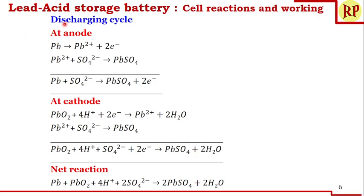Now we will understand what happens during a discharging cycle — that is, when we are using the battery to get electricity. At the anode, oxidation always occurs, and at the cathode, reduction always occurs. The lead anode undergoes oxidation to form Pb²⁺ and release 2 electrons. This Pb²⁺ combines with sulfate ions from the sulfuric acid to form lead sulfate, which surrounds the electrode. So the overall anodic reaction is: Pb + SO₄²⁻ → PbSO₄ + 2e⁻.